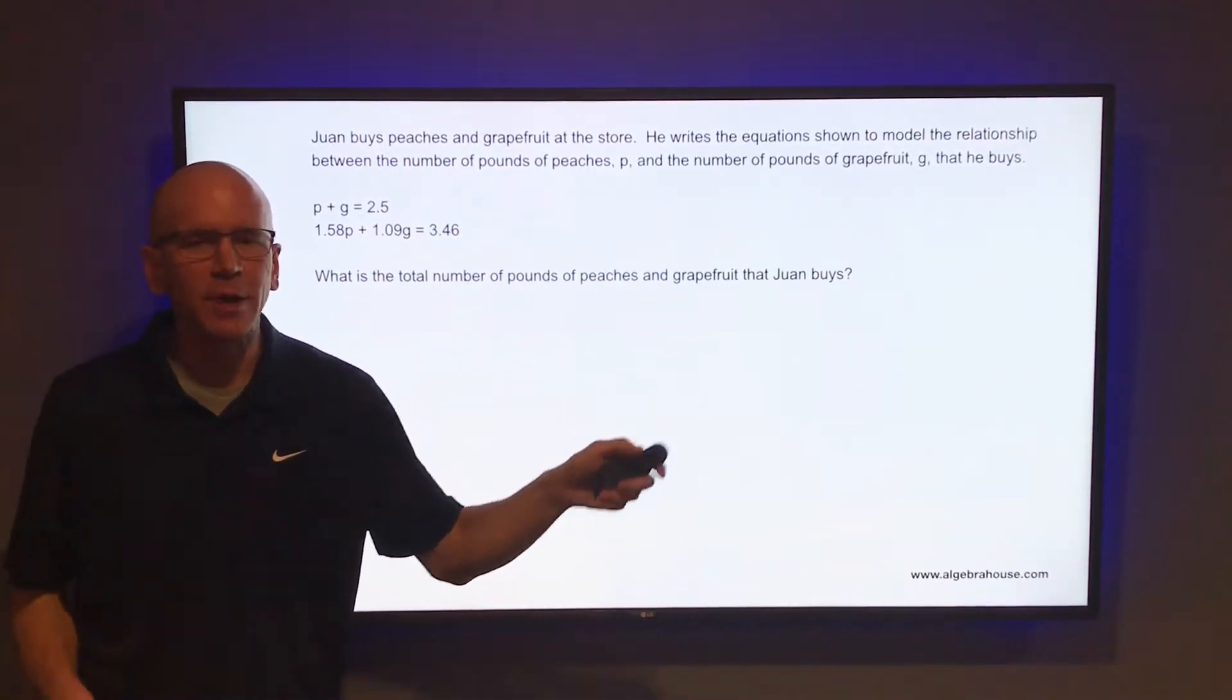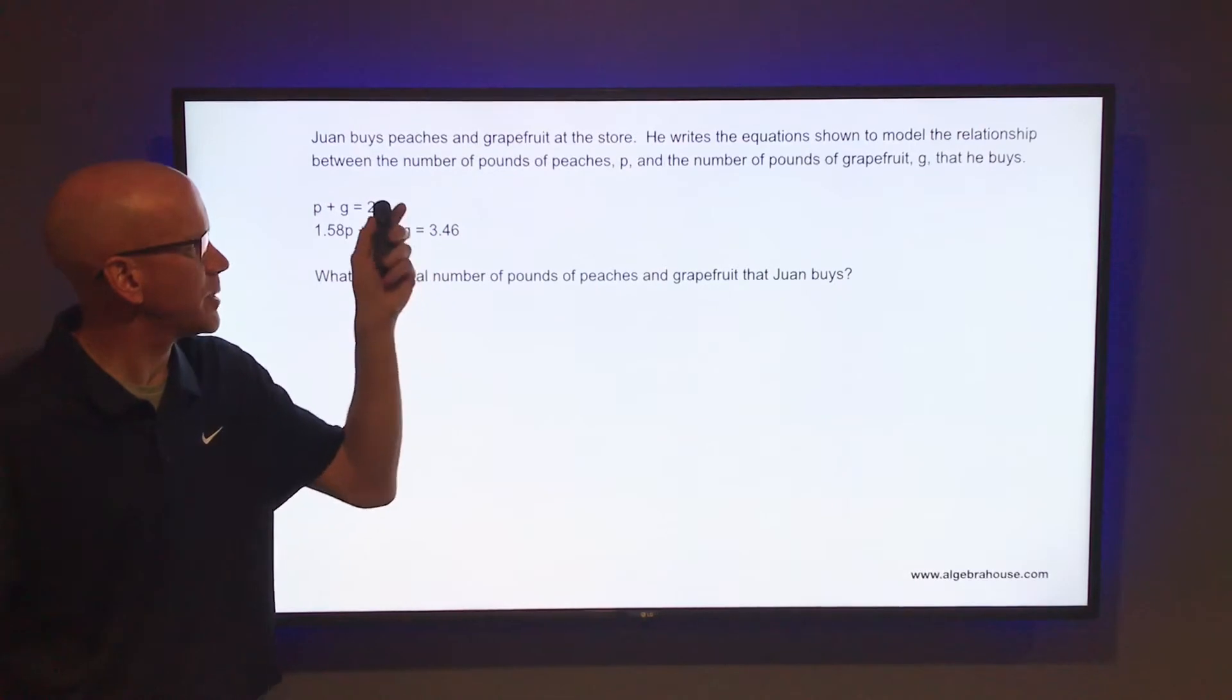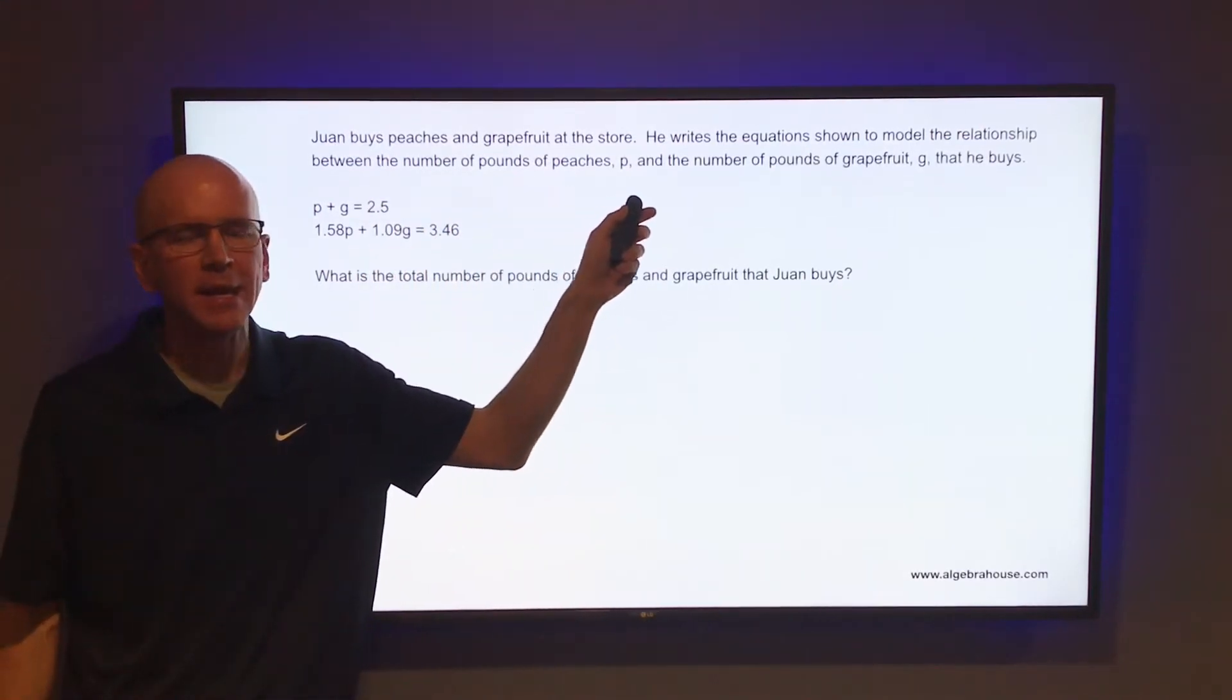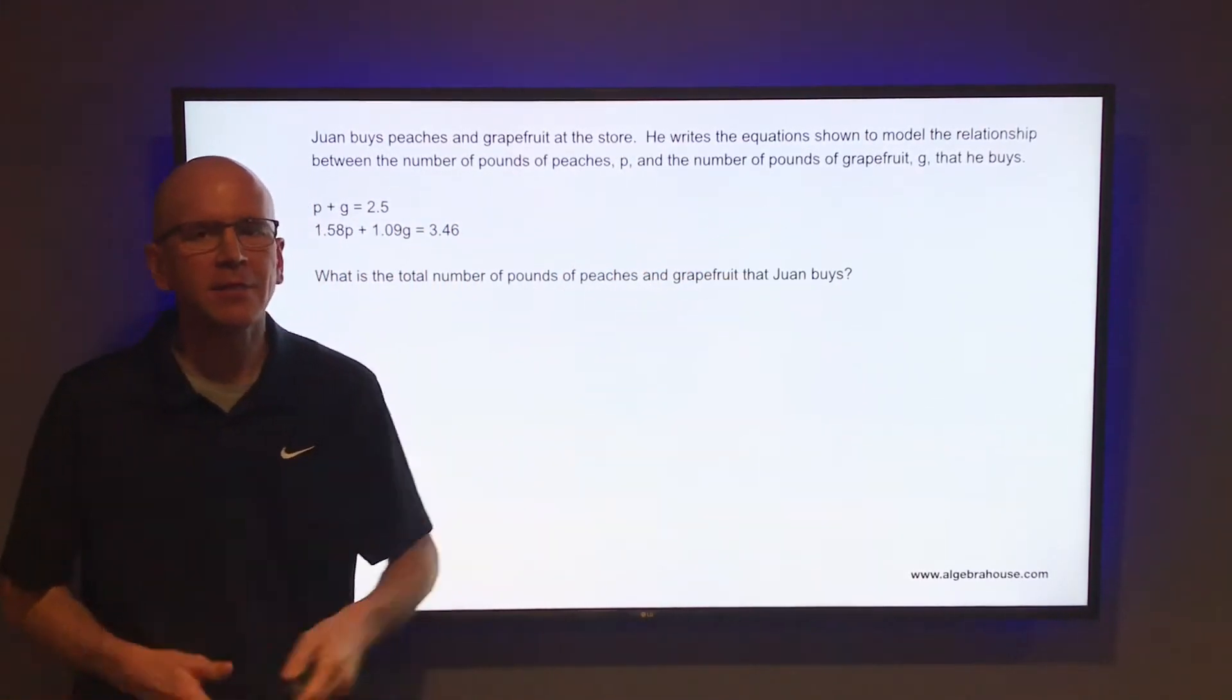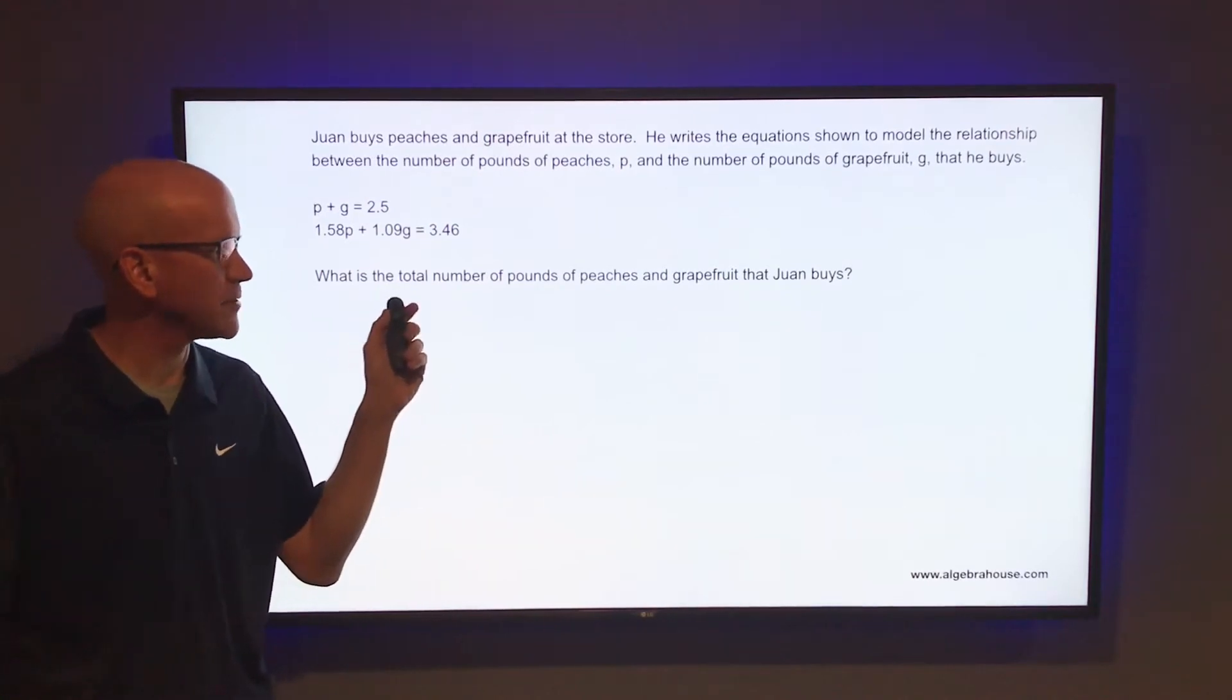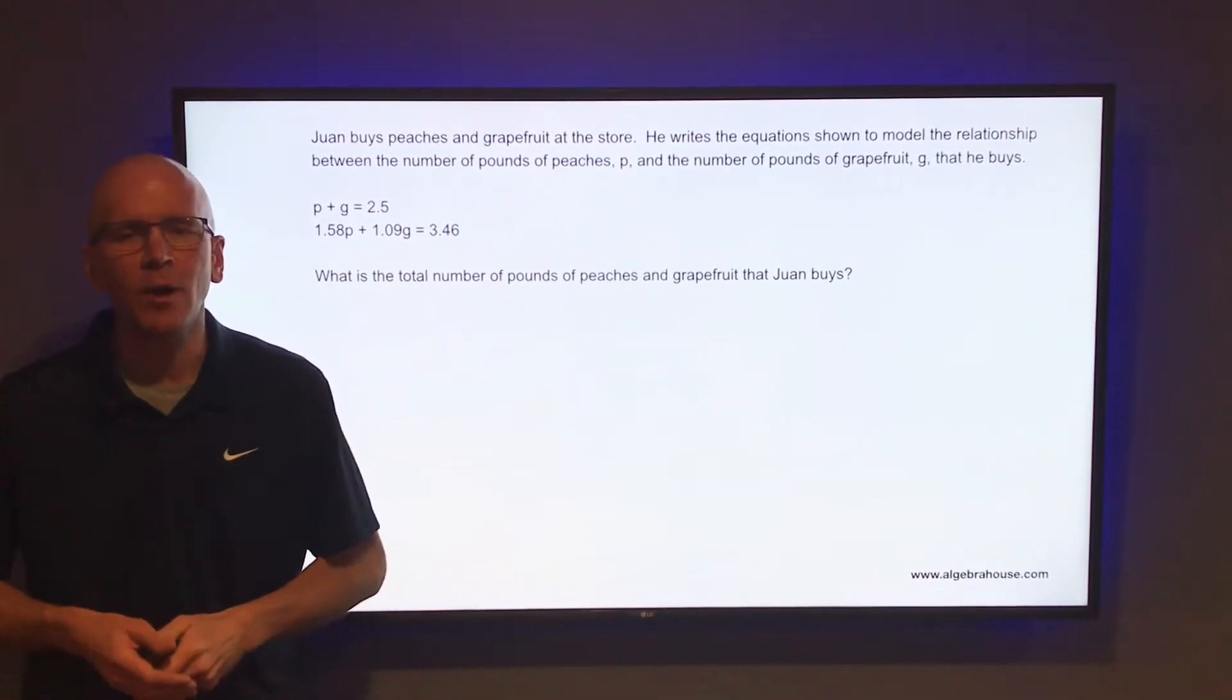Juan buys peaches and grapefruit at the store. He writes the equation shown to model the relationship between the number of pounds of peaches P and the number of pounds of grapefruit G that he buys. What is the total number of pounds of peaches and grapefruit that Juan buys?